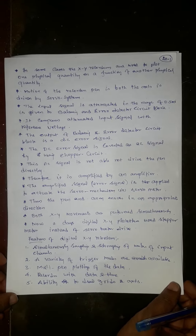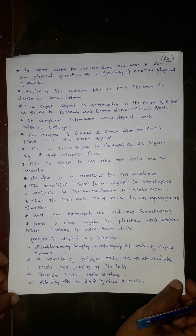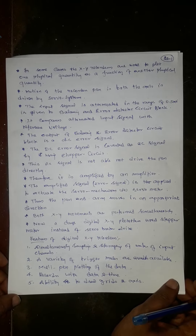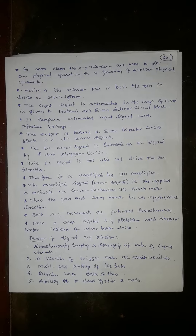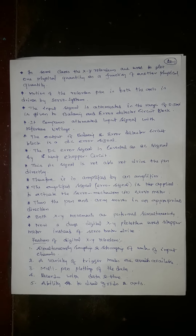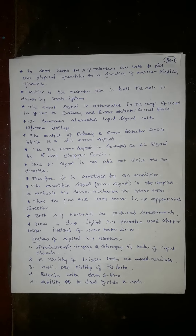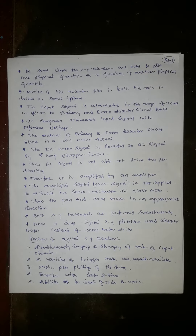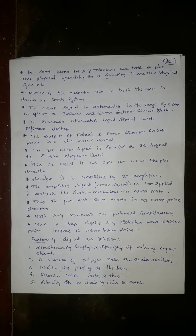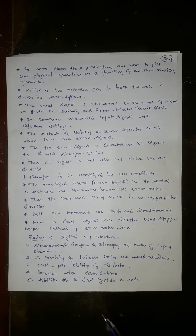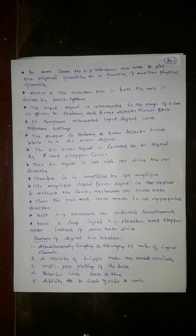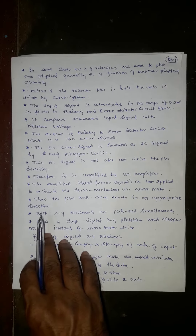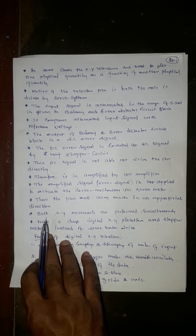This DC error signal is converted to an AC signal by using a chopper circuit. The AC signal is not able to drive the pen directly because it is low in voltage and current, so we have to amplify it. Therefore, it is amplified by an amplifier. The amplified error signal is then applied to activate the servo mechanism, that is, the servo motor.